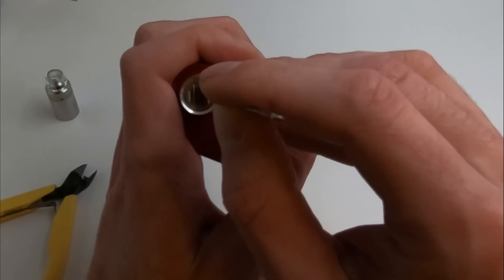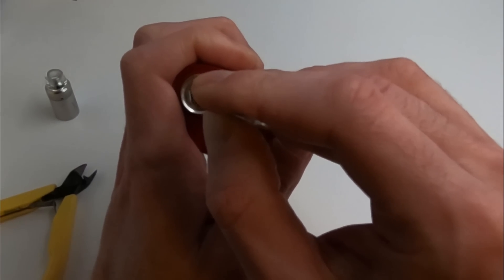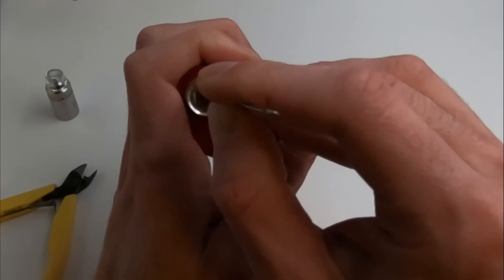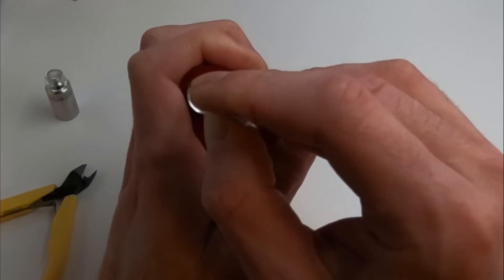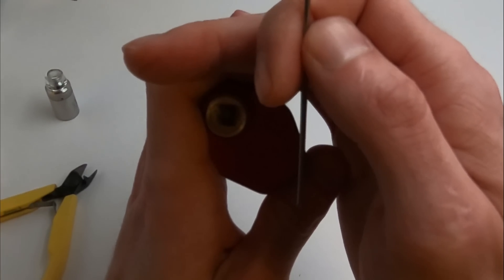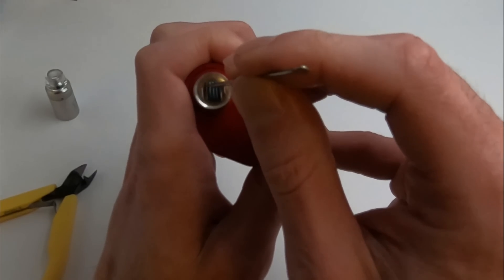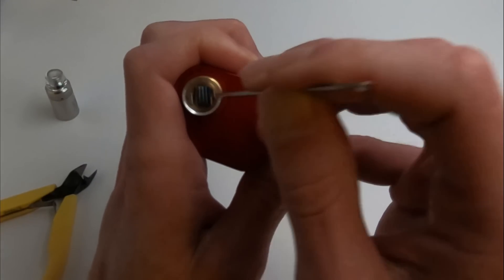So we basically want to rock it back and forth and get the wraps to shift around. So you can see it kind of glowed up right there. We can see where it's getting the hottest and that's where we'll poke.